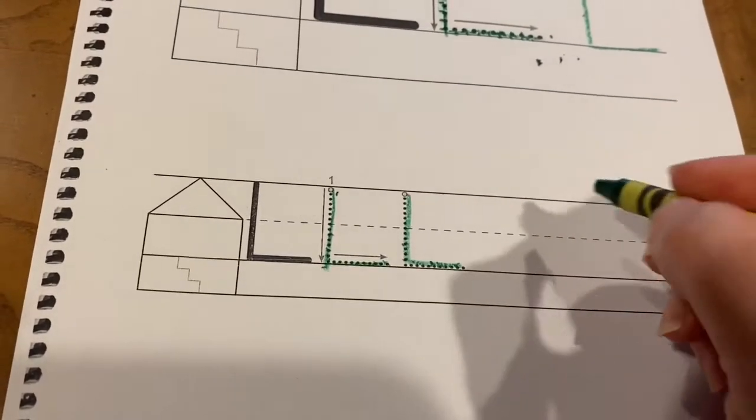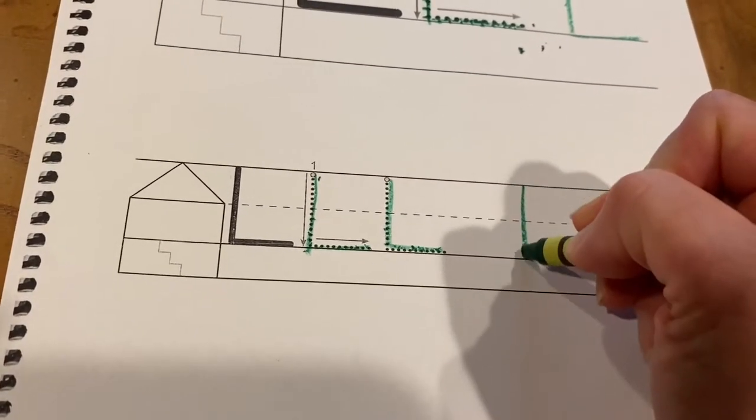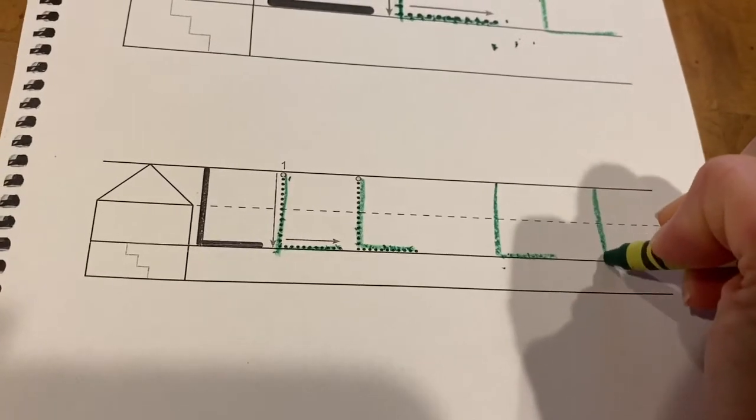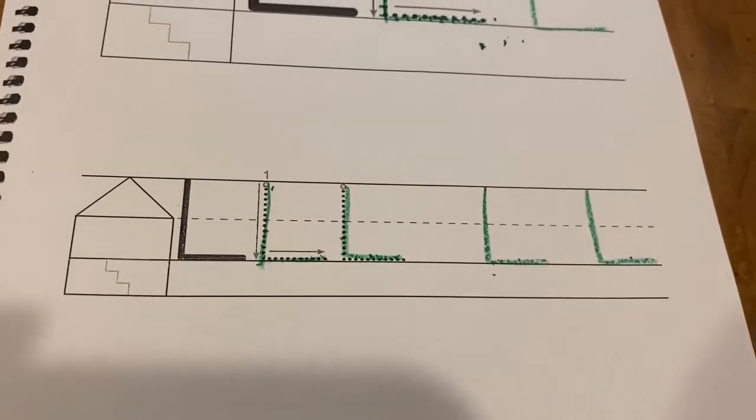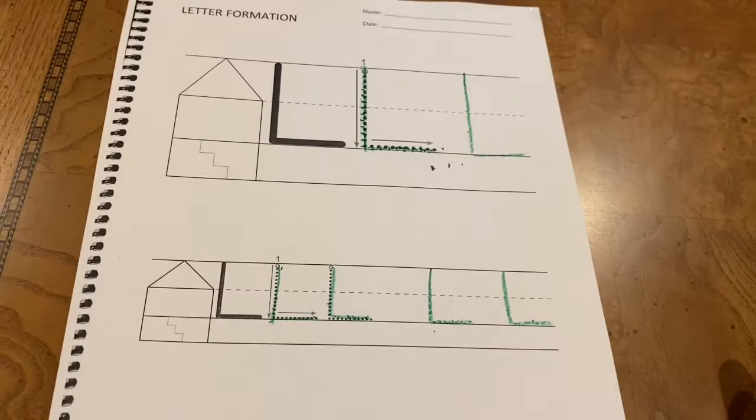And then you're going to do two of your own. One and two. Just do two and do them slowly and carefully.